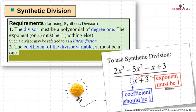Condition number 1: the divisor must be a polynomial of degree 1 — the exponent on X must be 1. Condition number 2: the coefficient of the divisor variable X must be 1. So if we look here, the coefficient of X is 1 and the exponent of X is also 1. This is the condition we need to follow if we want to use Synthetic Division.